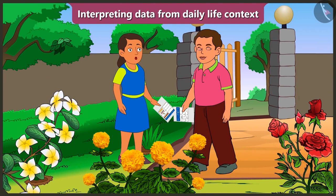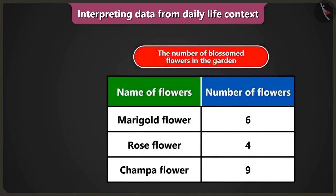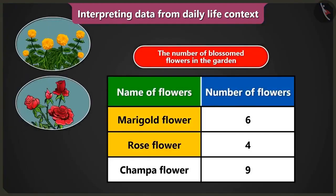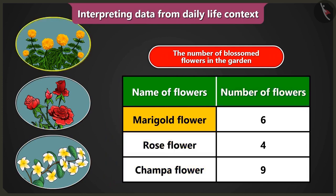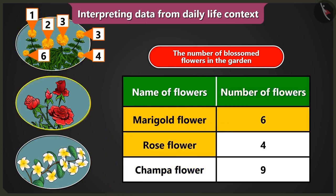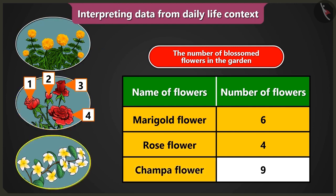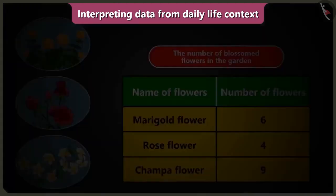This is very interesting. And now I will not have to count the flowers one by one. After understanding the table, I have understood which and how many flowers have blossomed in the garden. I understood that there are three kinds of flowers — marigold, rose, and chumpa — that have blossomed. There are six marigold flowers, four rose flowers, and nine chumpa flowers.